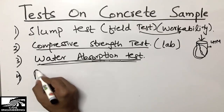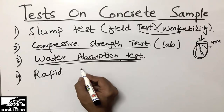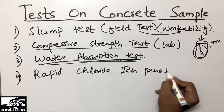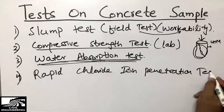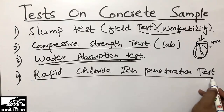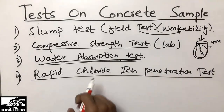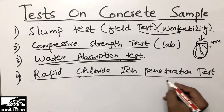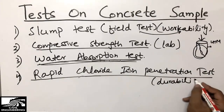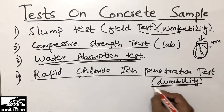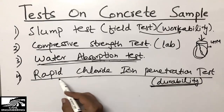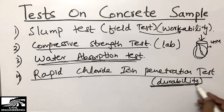The fourth one is the Rapid Chloride Ion Penetration Test. This is a very important test especially for mega structures where huge construction is going on. This test is used to check the durability of concrete — whether our structure will be durable or not. Durability is a very important property, and if our structure is durable it means it will last for a long span of time.